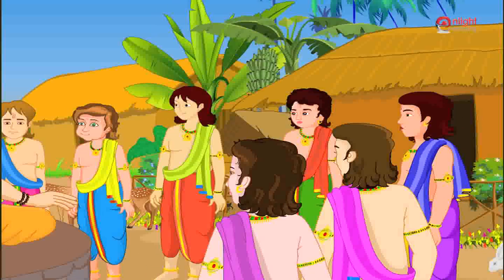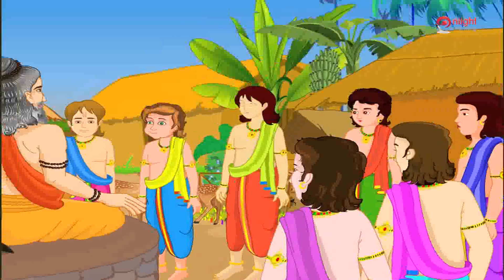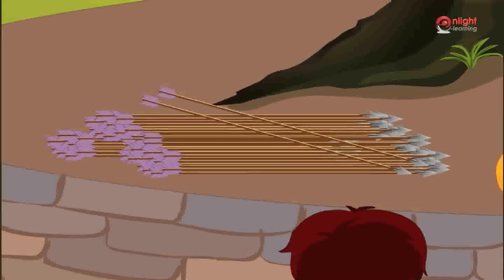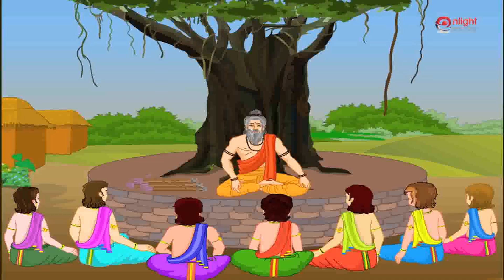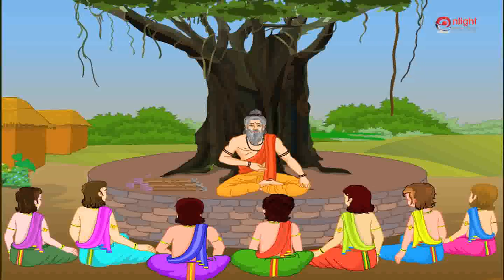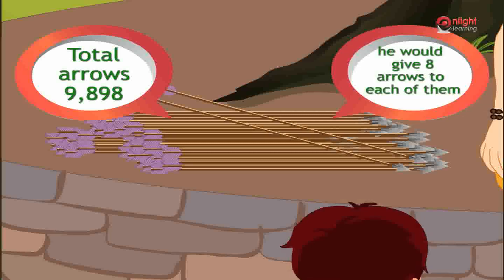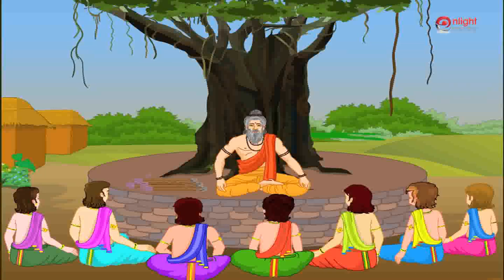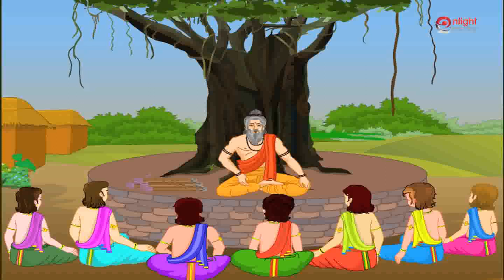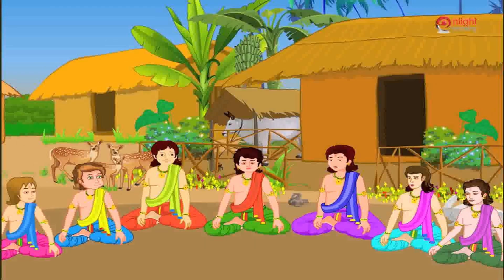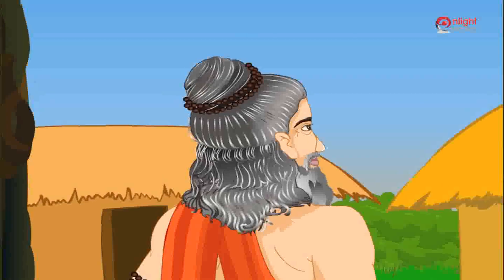Though each prince was well versed in a particular skill, Guru taught the princess how to use all weapons. One day Guru showed them many arrows arranged in a place. He told the princess that he would give all the princes an equal amount of arrows. He said that there were 9,898 arrows and he would give 8 arrows to each of them. He asked the princess to find out how many disciples would get 8 arrows and how many arrows would be left over. The princess found it difficult to divide, so Guru taught them the division process.